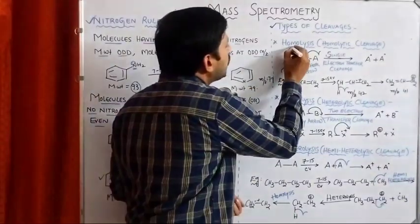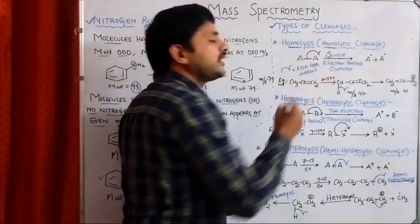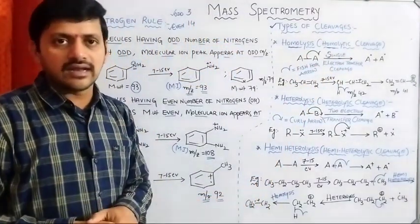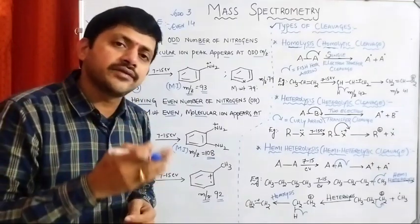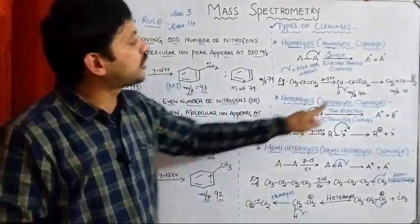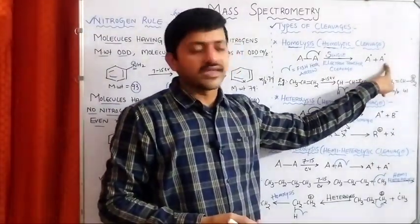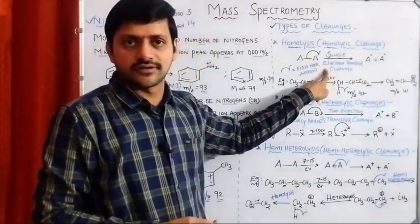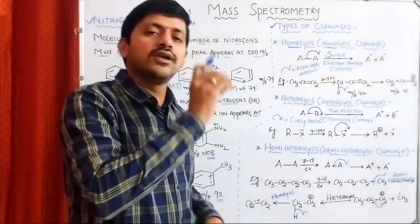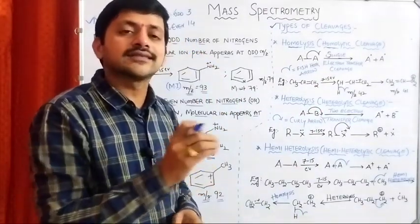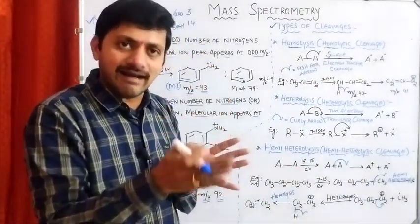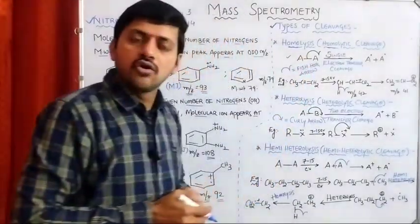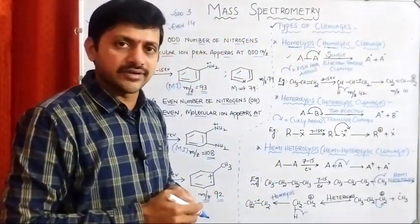The first type is homolysis, or homolytic cleavage. We are all familiar with homolytic cleavages. The homolytic cleavage of any bond produces free radicals. In homolytic cleavage, a single electron transfer occurs. If you transfer only a single electron, we get radicals. This is commonly called homolysis or homolytic cleavage.